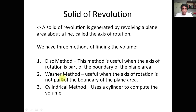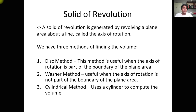The washer method is useful when the axis of rotation is not part of the boundary of the plane area. For example, we have two curves, and these two curves are not actually bounded by the X or Y axis — they form a boundary not touching the X and Y axes. So what we do is use the washer method, which involves an outer radius minus an inner radius.